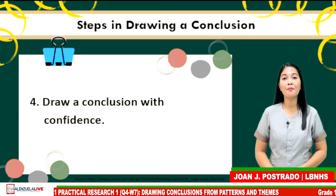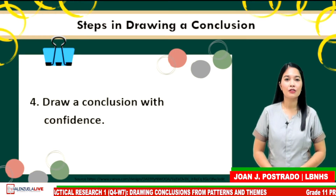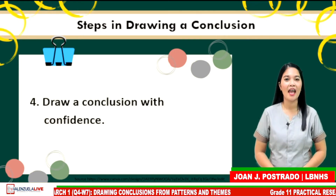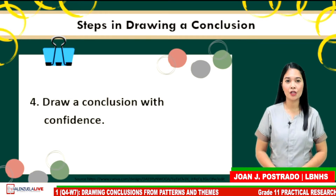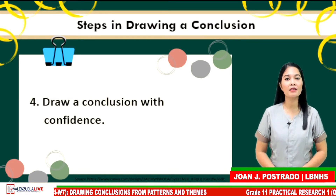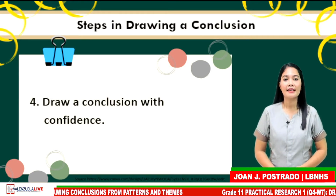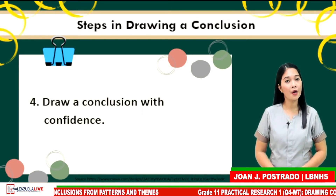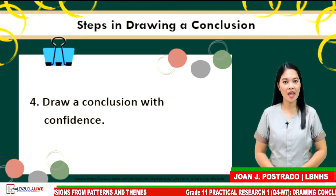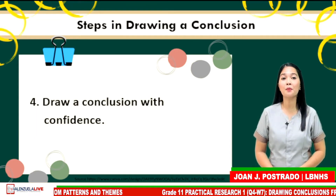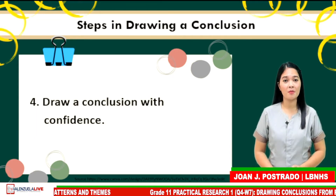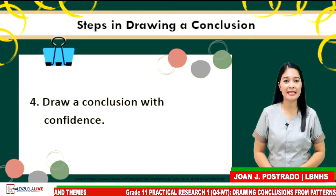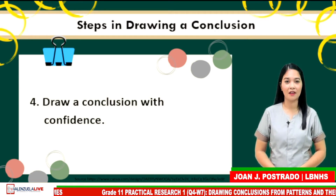Step 4: the researcher should avoid the use of qualifiers such as probably, perhaps, maybe, and the like, to keep away from giving doubts on the validity and reliability of the result.